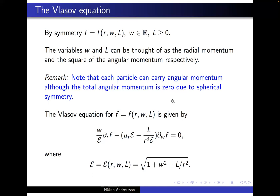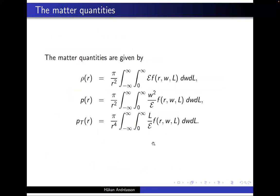In this kinetic setting each particle can carry angular momentum, but for a static solution the total angular momentum is zero. The particles certainly rotate and each particle carries angular momentum, but for a spherically symmetric steady state the total angular momentum vanishes. The last equation in the static case involves this quantity epsilon, which denotes the square root of one plus w squared plus L over r squared. The matter quantities are obtained by integrating with respect to the momentum variables with different kernels for the different components. All those quantities are non-negative and all the energy conditions are automatically satisfied.